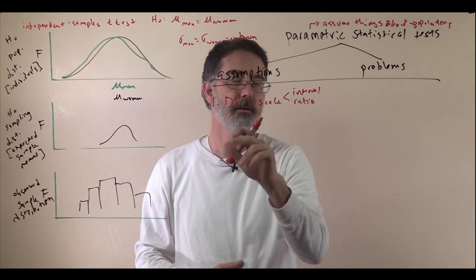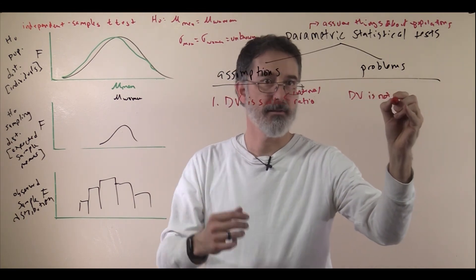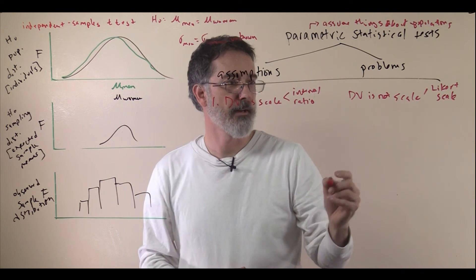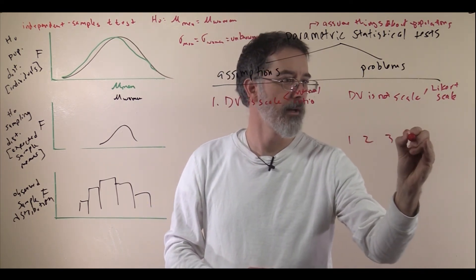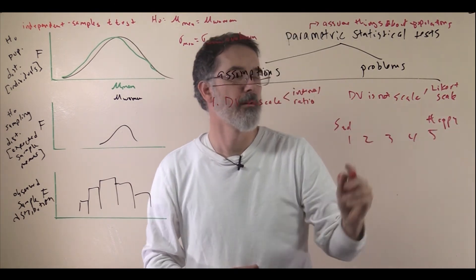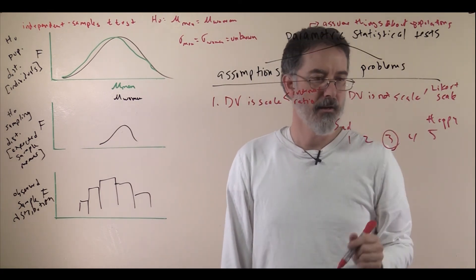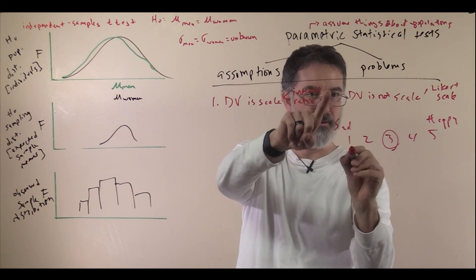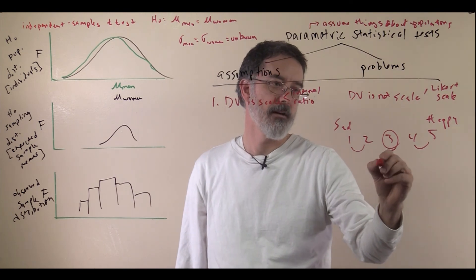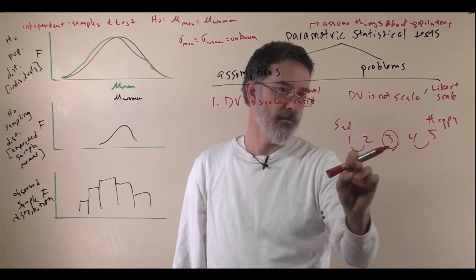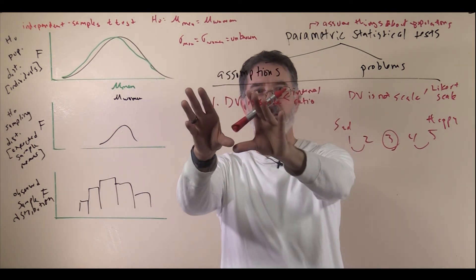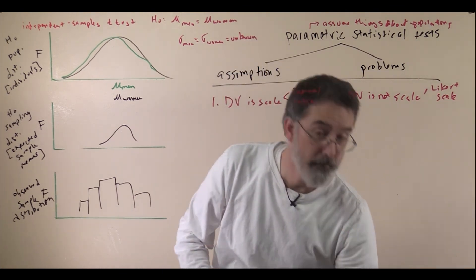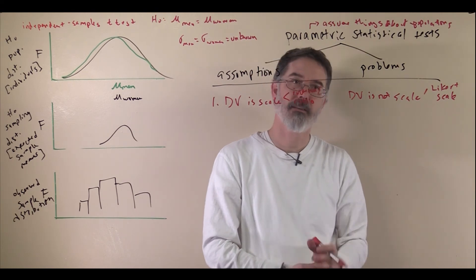In practice, you could run into problems if your dependent variable is not ratio or interval. This is actually common in psychology, because we use Likert scales a lot — scales where, for example, you might say on a 1 to 5 scale, are you happy or sad? Somebody would say, 'I am right in the middle today, I am a 3.' Psychologists treat these measures as interval, assuming the distance between points is the same, but really these are ranks. 2 is higher than 1, 5 is higher than 4, but we do not know that those distances are the same.